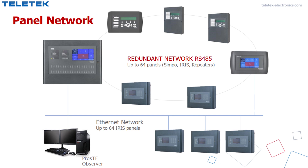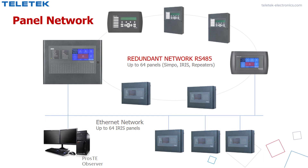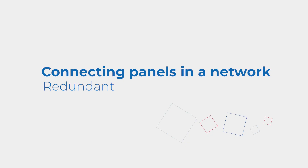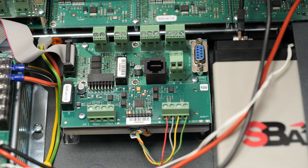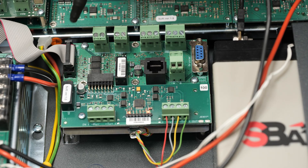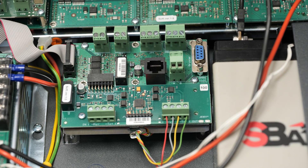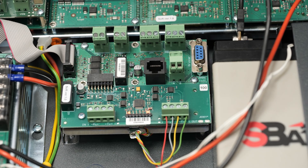The second option is to use the built-in LAN modules in the Iris panels to create a network over LAN. The network model is an additional PCB mounted under the main board of the panel and it is connected to the network connector. In this case, we are using an Iris panel for the example.